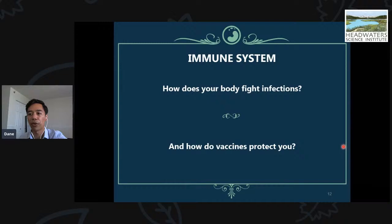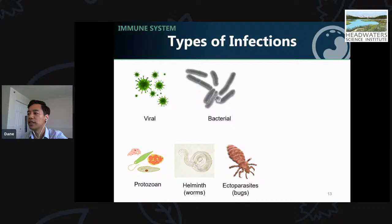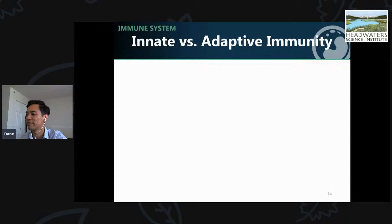Now we'll switch gears and talk a little bit about the immune system. How does your body fight infections, and how do vaccines actually protect you? Infections can come in several different flavors: viral, bacterial, parasitic — like protozoans, worms, bugs — and finally fungal. Not like the zombies from games and movies, more like the foot kind.